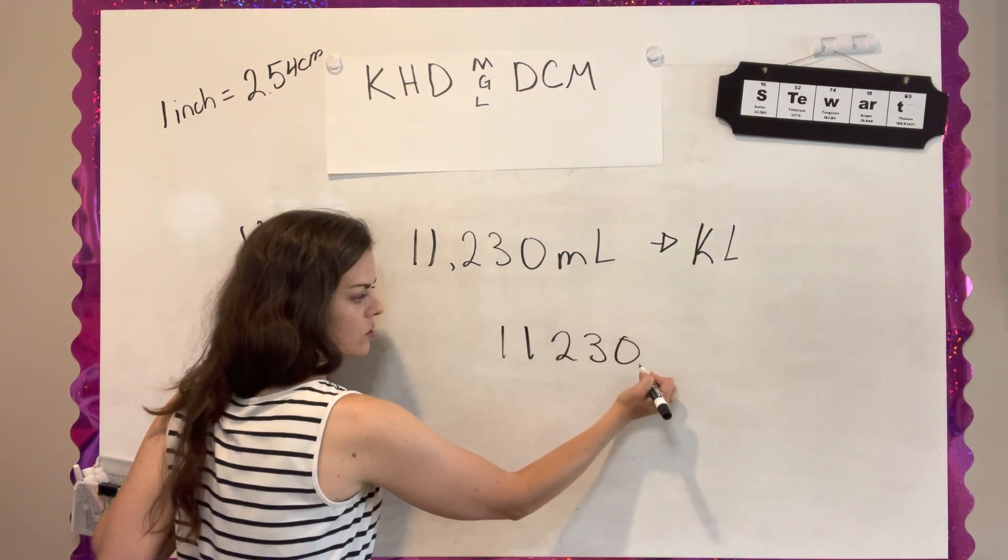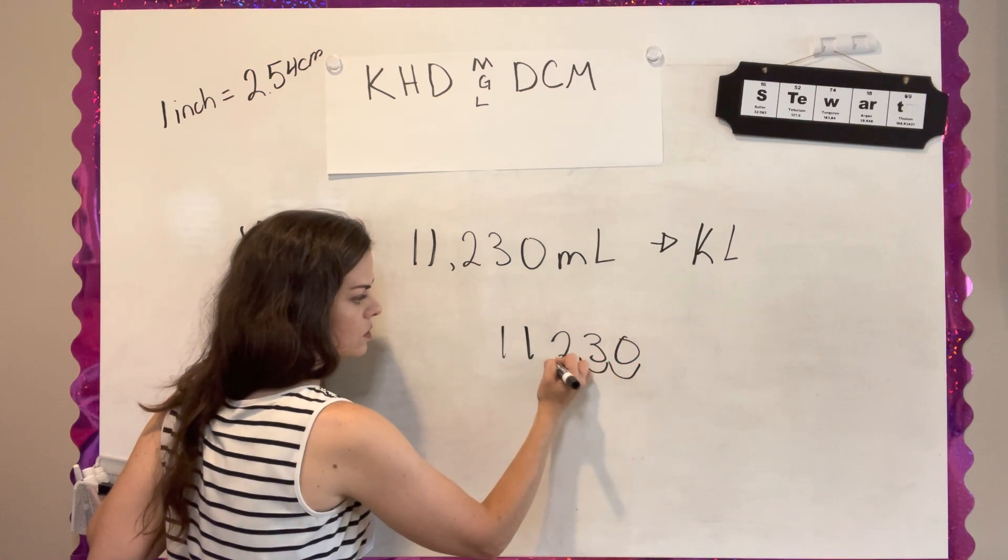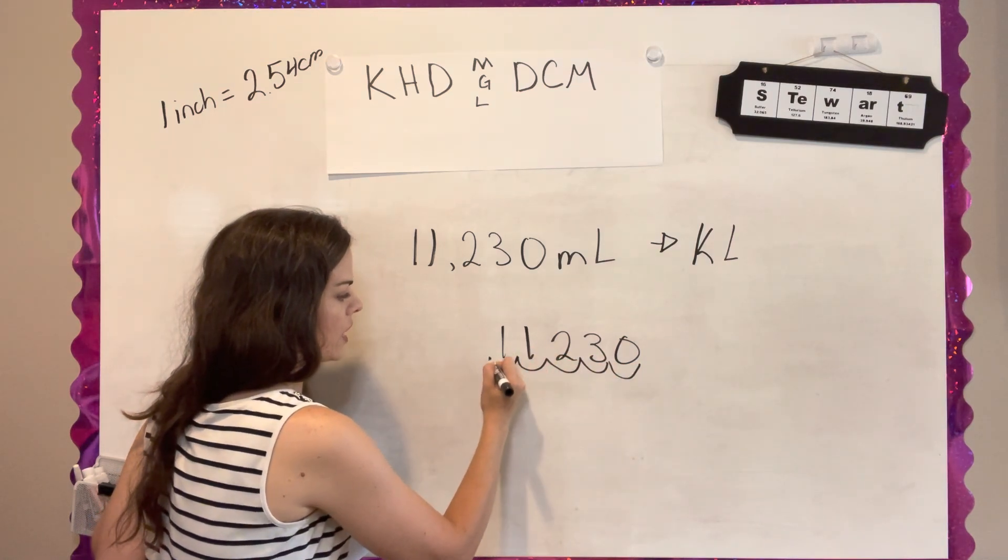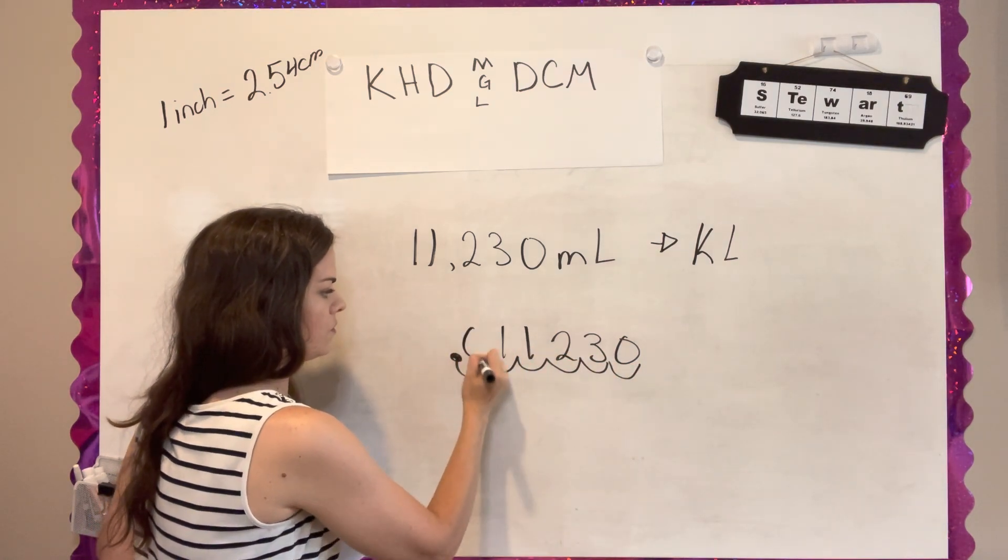My decimal's here starting out 1, 2, 3, 4, 5, 6, and then fill in with zeros.